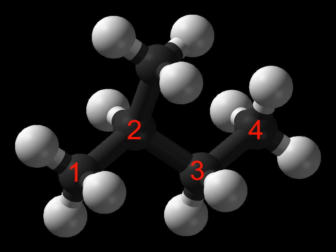Branched alkanes can be chiral. For example, 3-methylhexane and its higher homologues are chiral due to their stereogenic center at carbon atom number 3. In addition to the alkane isomers, the chain of carbon atoms may form one or more loops. Such compounds are called cycloalkanes. Stereoisomers and cyclic compounds are excluded when calculating the number of isomers above.